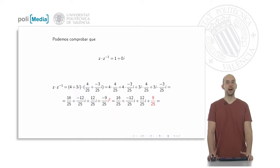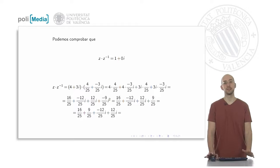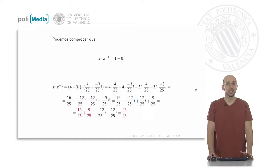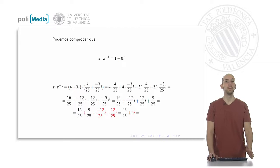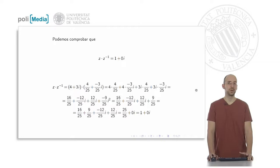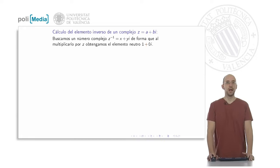Joining real parts with real parts and imaginary parts with imaginary parts: 16 over 25 plus 9 over 25 equals 25 over 25, which is 1. And minus 12 over 25 times i plus 12 over 25 times i gives zero i. Conclusion: the solution is one plus zero i — exactly what we wanted to prove.